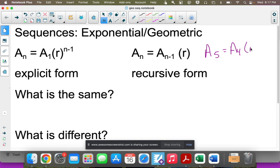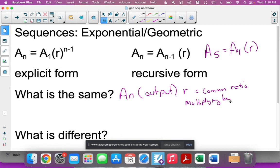What's the same? A_n is your output. r is what we call our common ratio - it's basically what you are multiplying by. That does include fractions; you can have a fractional base just like in exponentials before.